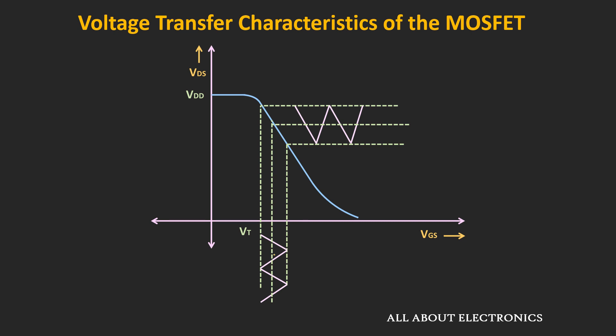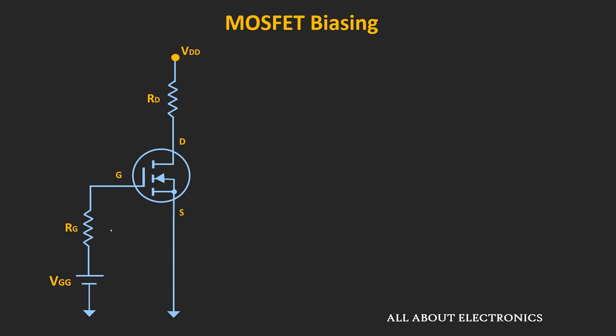To use the MOSFET as an amplifier, it needs to be biased properly so that it operates in the saturation region and can provide almost linear amplification. The easiest way to bias this MOSFET is by applying a fixed voltage between the gate and the source terminal. Since the gate current Ig is approximately equal to zero, there will not be any voltage drop across the resistor Rg. That means in this case, the voltage Vgs is equal to Vgg. On top of it, a small input signal can be applied through the coupling capacitor, but for the DC analysis, this coupling capacitor will act as an open circuit.